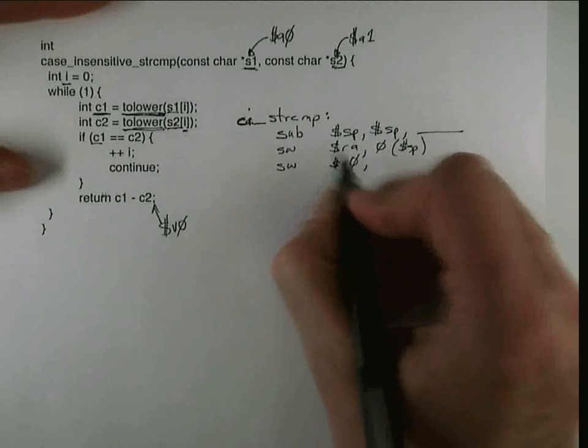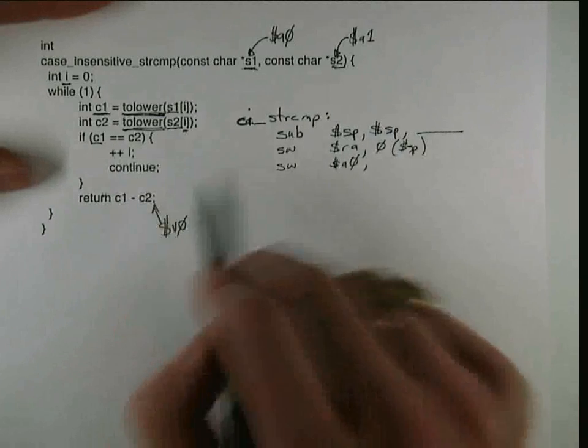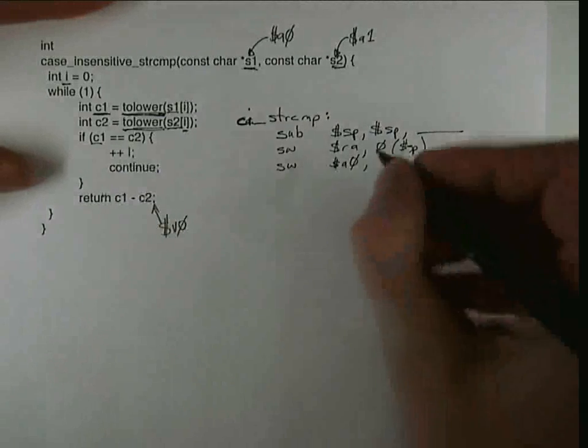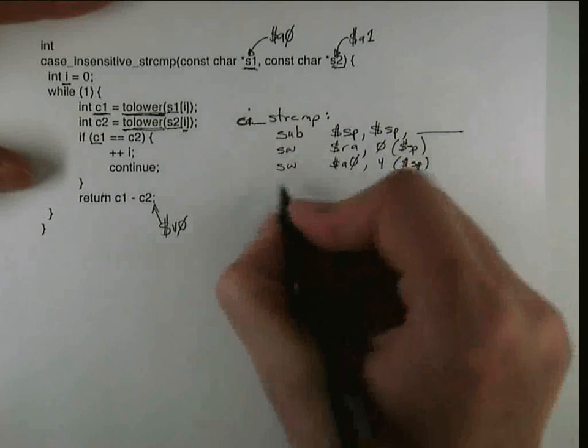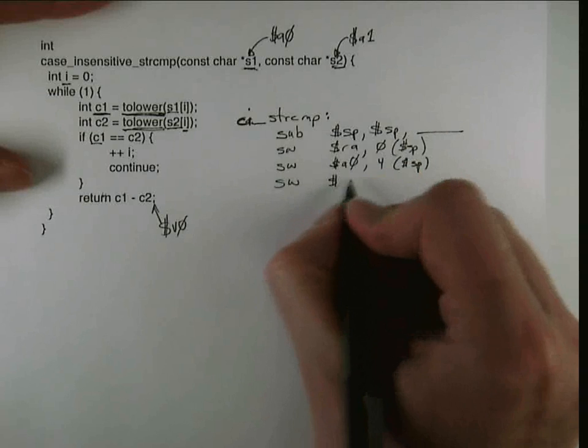And once I've saved them, since they aren't changed by the code itself, I'm never going to need to save them again elsewhere in the code. And so I'm going to allocate them to the next two slots in this stack frame.